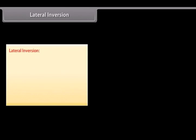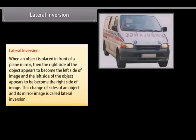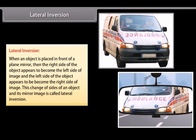Lateral inversion. When an object is placed in front of a plane mirror, then the right side of the object appears to become the left side of image, and the left side of the object appears to become the right side of image. This change of sides of an object and its mirror image is called lateral inversion.